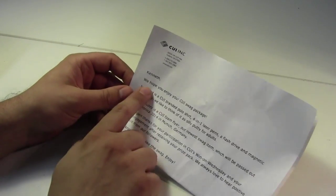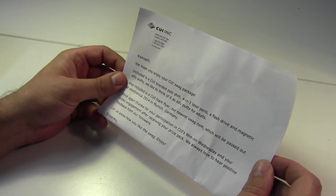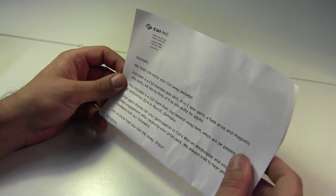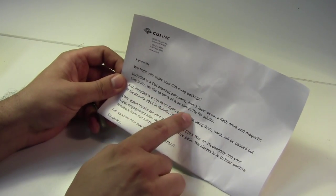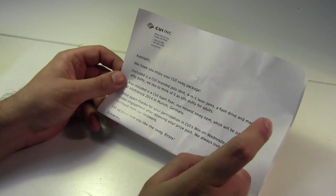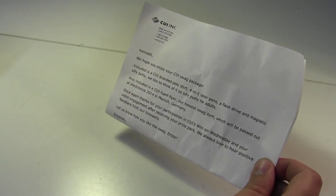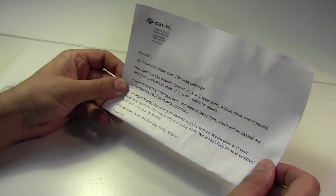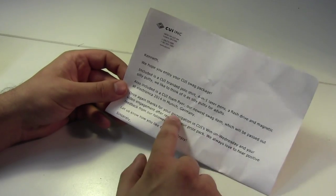This one with a personalized letter. Kenneth, we hope you enjoy your CUI swag package. Included is a CUI-branded polo shirt, 4-in-1 laser pens, a flash drive, and magnetic silly putty. We like to think of it as silly putty for adults. Magnetic silly putty is really neat, and I've never gotten to play with it. Also included is a CUI foam flyer, our newest swag item, which will be passed out at Electronica 2014 in Munich, Germany.